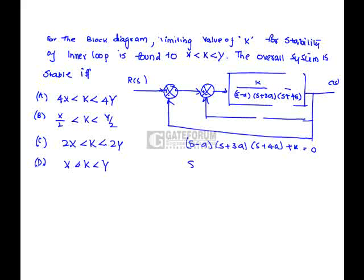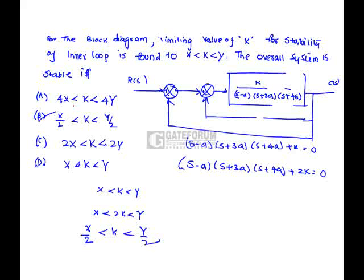For the outer loop characteristic equation is similar except K is replaced by 2K because it is going to be added twice because of the feedback is going to be repeated twice. So, if K is in between X and Y, 2K is between X and Y for the outer complete system to be stable. So, K should be X by 2 greater than less than Y by 2. Hence, option B is correct.